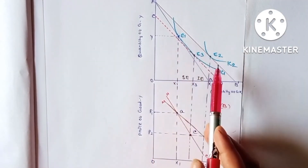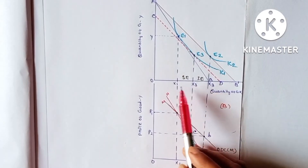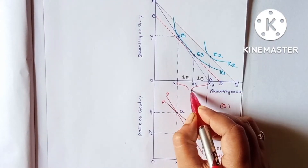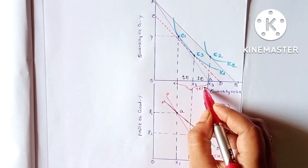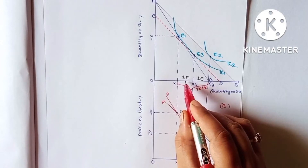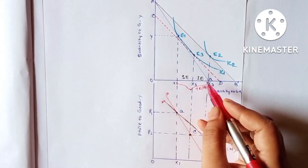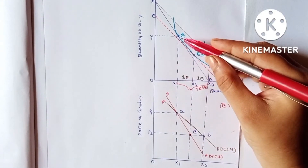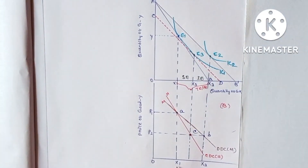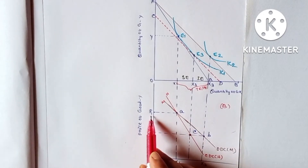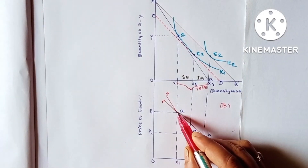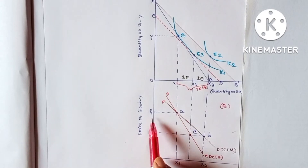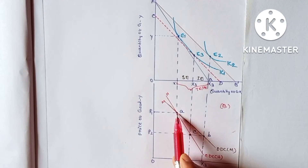The shift from E1 to E2, that is from X1 to X2, is called the total effect or price effect, which includes substitution effect and income effect. With the old budget line and indifference curve IC1, the consumer was purchasing OX1 of good X at price OP1 — we mark this as point A in figure B.